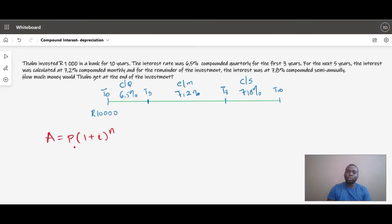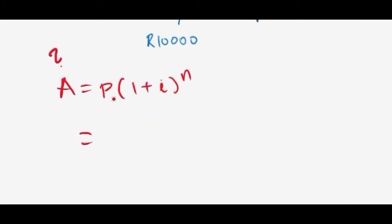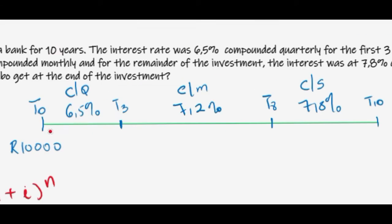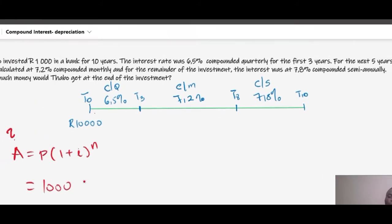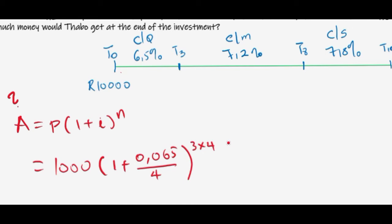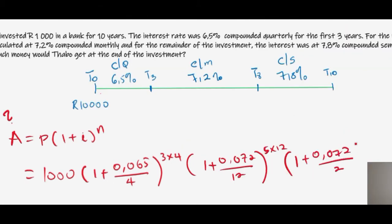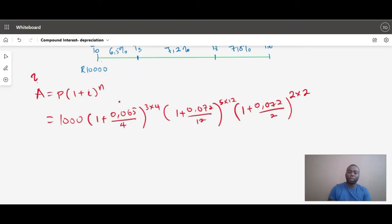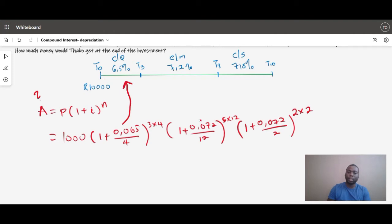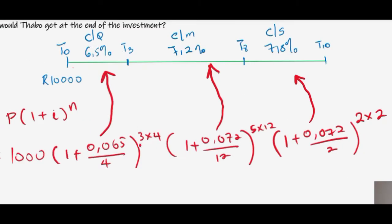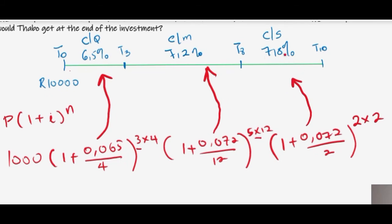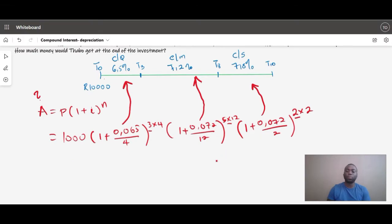Since we want to calculate how much money Turbo gets at the end of the investment, A is what we are trying to find and our P is 1,000 rand. For each period of interest, it should have its own bracket. The first bracket is for the quarterly part, covering three years; the second bracket is for the monthly part, covering five years; and the third bracket is for the semi-annual part, covering the remaining two years. All we have to do is put this into our calculator.